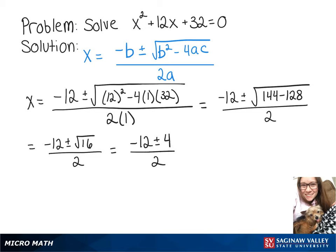So we're going to have two possible solutions: either x equals negative 12 plus 4 over 2, or x equals negative 12 minus 4 over 2.